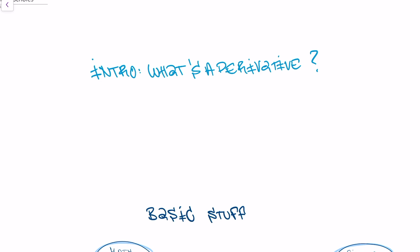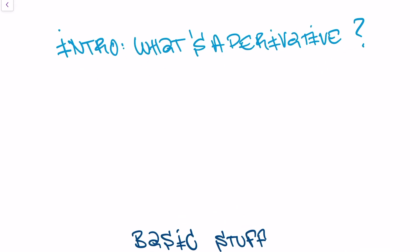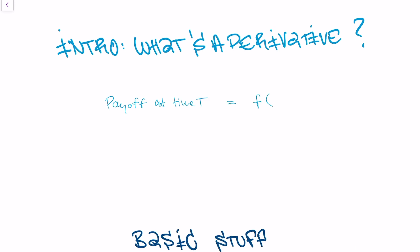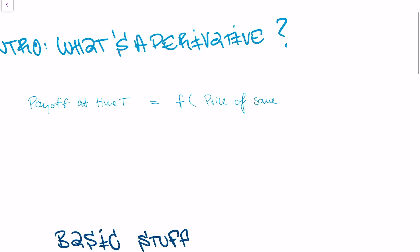When we want to get into this model, we need to understand what is a financial derivative. A financial derivative is a contract that gives you a payoff at a certain time, let's call this time T, and this payoff is dependent on the price or worth of some financial asset. It's actually a function of the price of this financial asset.